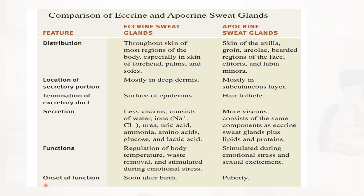To compare: eccrine sweat glands activate soon after birth, while apocrine glands activate after puberty. The eccrine secretory portion is located mostly in the deep dermis, while apocrine glands are mostly in the subcutaneous layer. The eccrine duct terminates at the surface of the epidermis, while the apocrine duct opens into the hair follicle.